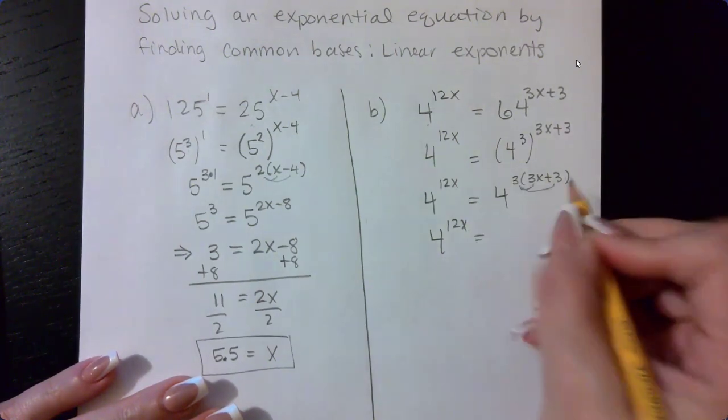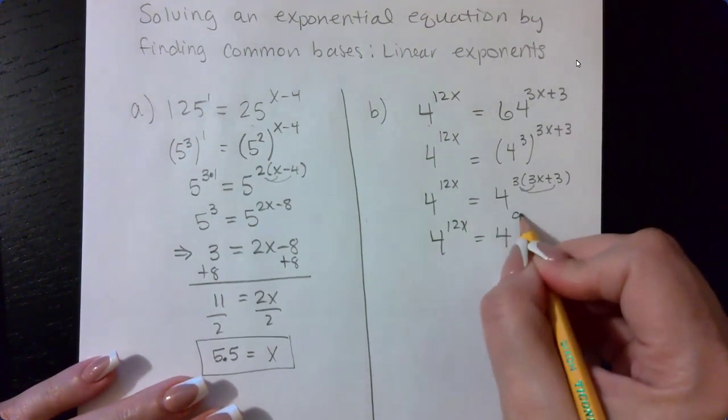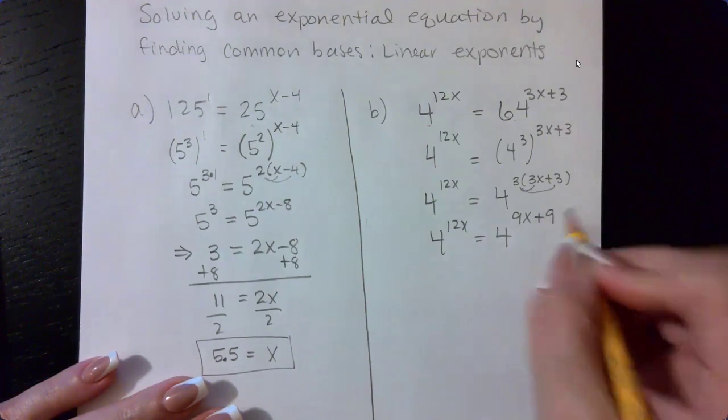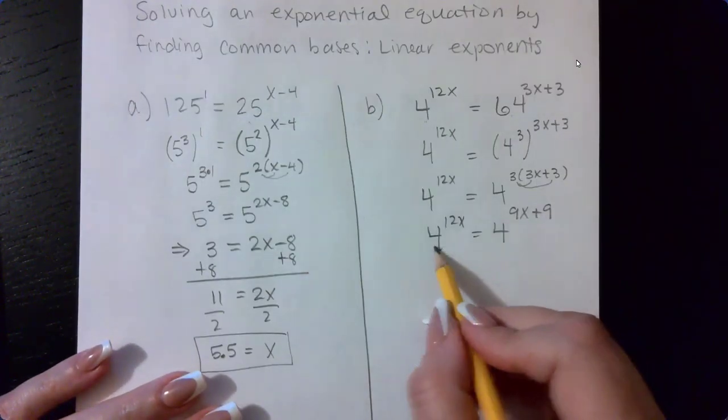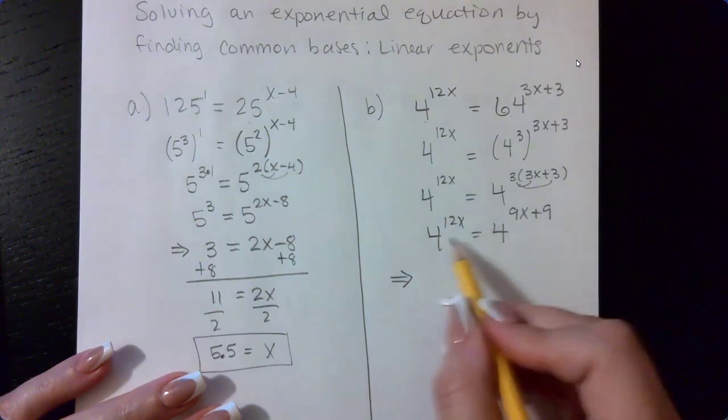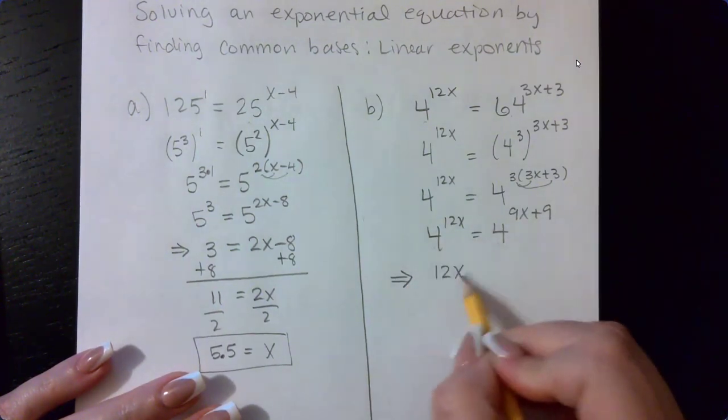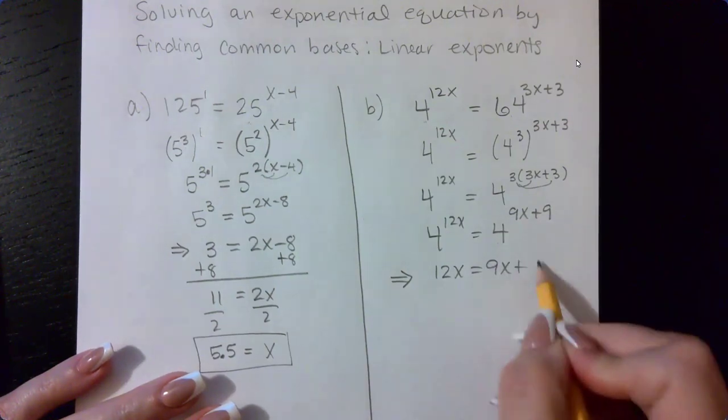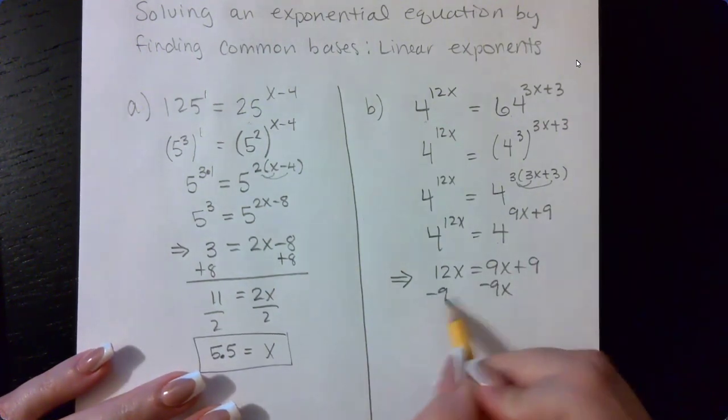So this actually ends up becoming 4 to the power 9 X plus 9. And again, once we use our one-to-one property, since the bases are the same, in order for these two expressions to be equivalent, those exponents need to be the same.